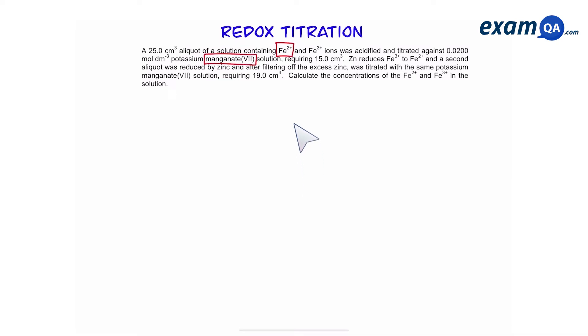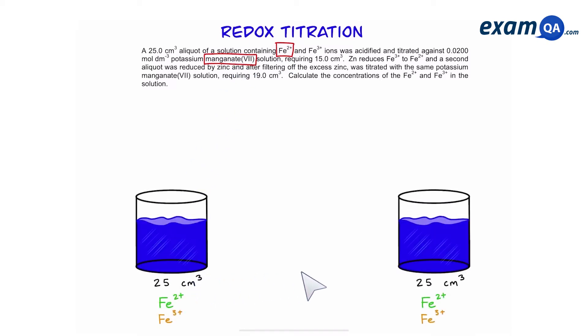The first thing that we're going to do is identify the reducing agent and the oxidizing agents in this question. We have two identical beakers, both containing iron 2 plus and 3 plus ions. The concentration and molar ratio of iron 2 plus and 3 plus is the same in both beakers. We want to work out the concentration of iron 2 plus and 3 plus.